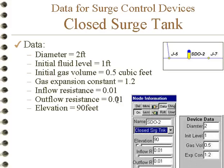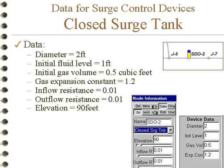The resistance for inflow and outflow — resistance is defined as the head drop over the flow squared — would have to be calculated based on the characteristics of the connection between the surge tank and the pipe. And this is the elevation of the node, so this is the data that we'll see when we set up a closed surge tank.